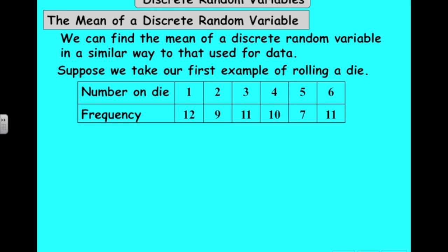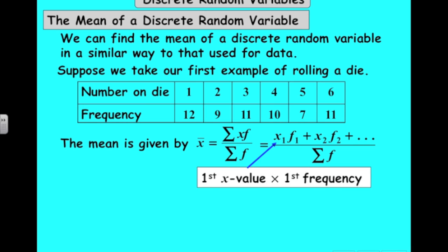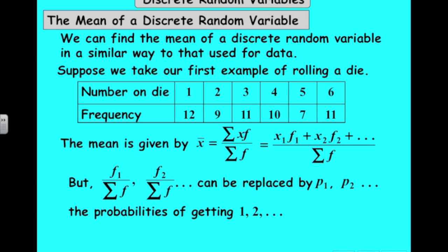Let's take the first example where we were rolling a die. We would have said the mean is the sum of xf over the sum of the frequencies. So we would have gone 1 times 12 plus 2 times 9 plus 3 times 11, divided by the sum of the frequency column, back in the representation of data unit. We could replace each frequency divided by the sum of frequencies by probabilities.